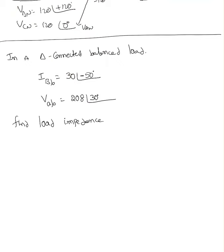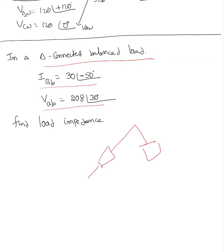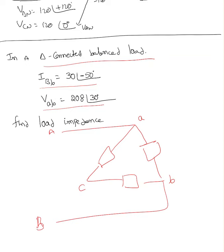In this example, he clearly mentioned it's a delta-connected balanced load. He gave you IBB and VAB, and he's asking about the load impedance. Let me draw a delta load. I always follow clockwise direction — that's also called positive phase sequence. Here are nodes A, B, and C. He gave us this current IBB as 30 at an angle of minus 50, and the voltage across this as 208 at an angle of 30 degrees.